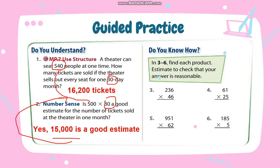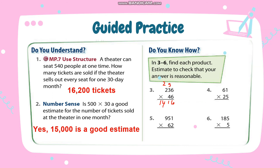Find each product and estimate to check that your answer is reasonable. Applying the standard algorithm: 6 times 6 is 36, so write 6 and regroup 3. 6 times 3 is 18, plus 3 is 21, so write 1 and regroup 2. 6 times 2 is 12, plus 2 is 14. That is the first partial product. Then put 0 before multiplying the tens place. 4 multiplied by 6 is 24, write 4 and regroup 2. 4 multiplied by 3 is 12, plus 2 is 14, write 4 and regroup 1. 4 multiplied by 2 is 8, plus 1 is 9. Adding all partial products gives the answer: 10,856.